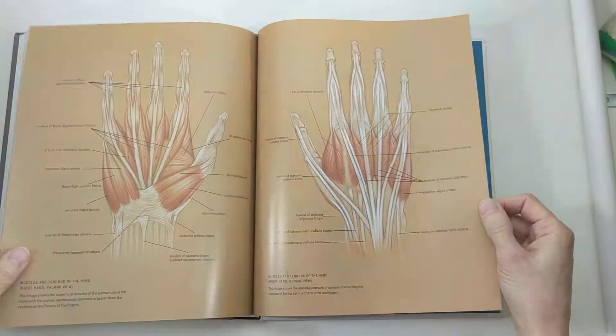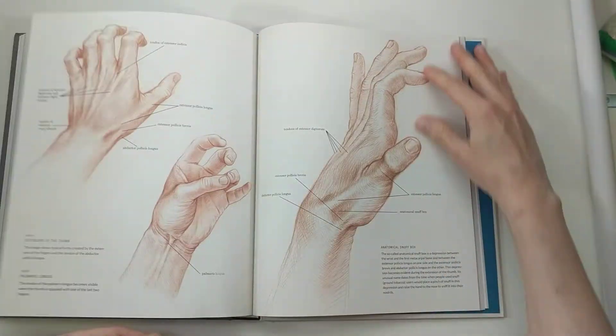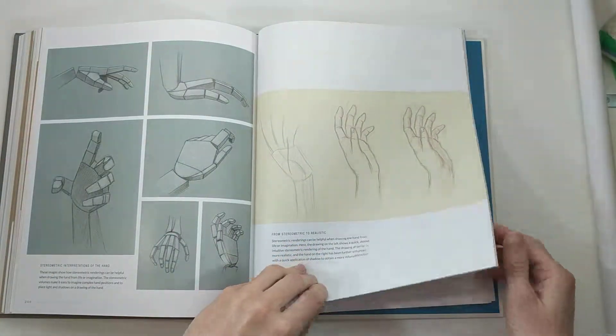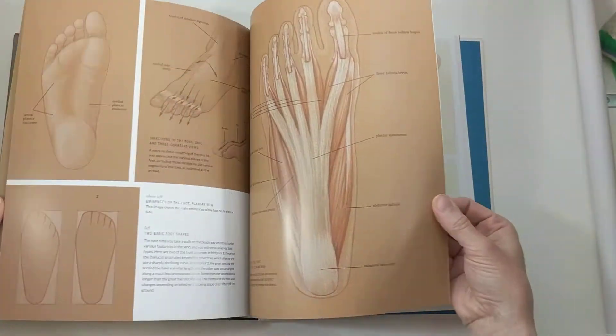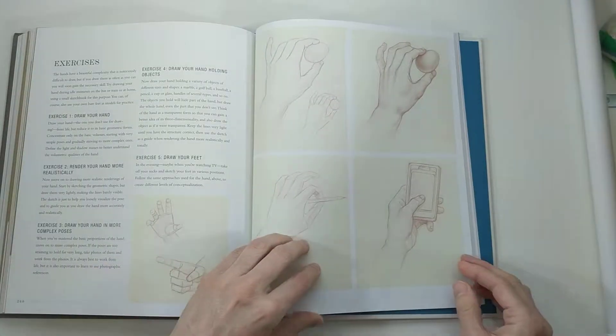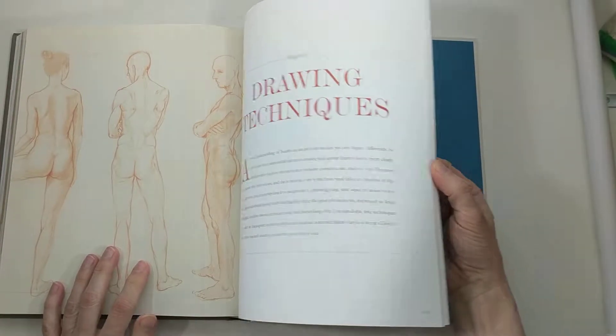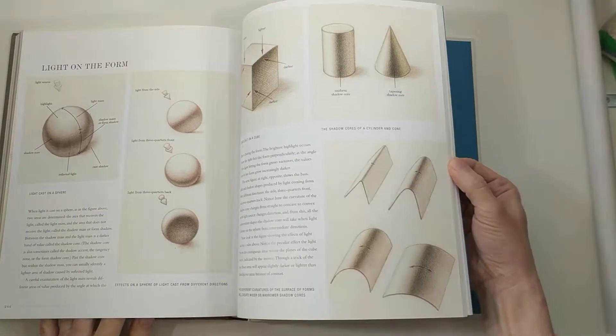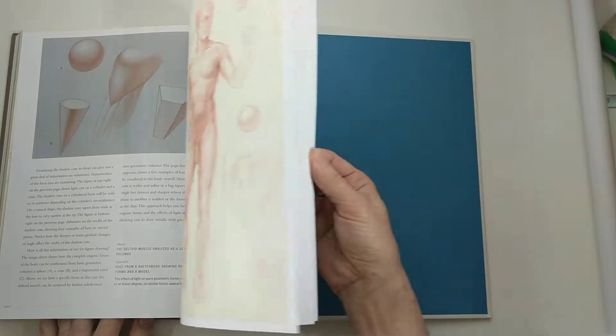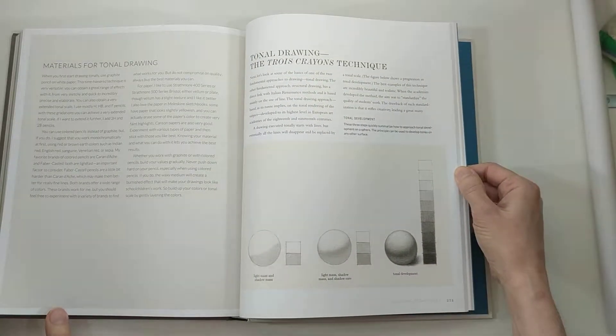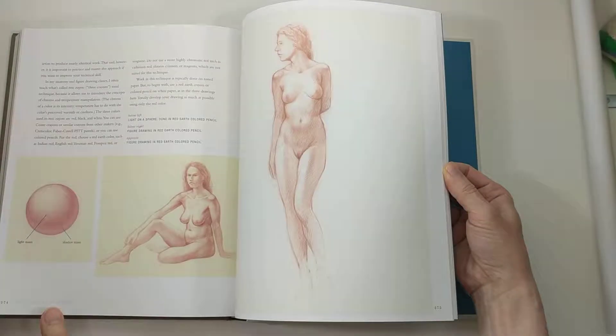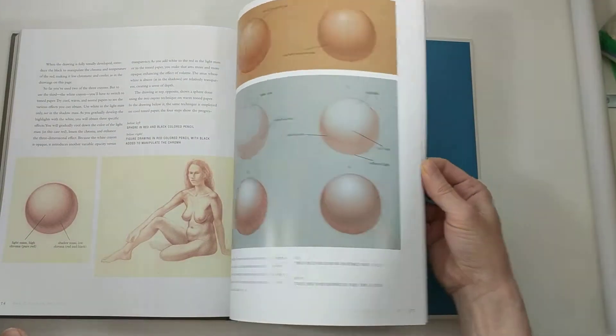There's a great section on hands, as well as feet, and then the back of the book has drawing techniques. He goes into light and form, and shadow, and tonal drawings, and how to apply all that to drawing the human figure.